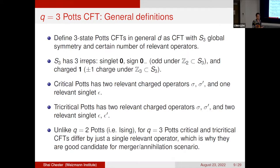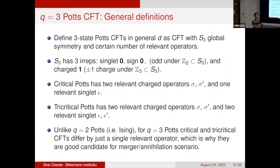The difference between critical and tricritical is that the tricritical has one extra relevant singlet. Unlike the q=2 Potts (Ising) case, for q=3 the critical and tricritical CFTs differ by just a single relevant operator, which is why they are a good candidate for merger and annihilation. For the Ising case they differed by two relevant operators, making it less likely they would merge — and indeed they don't. While it's not a rigorous statement, having fewer differing operators makes merger and annihilation more likely, though theories could still merge even with many extra operators.